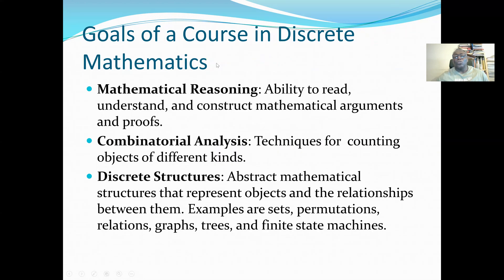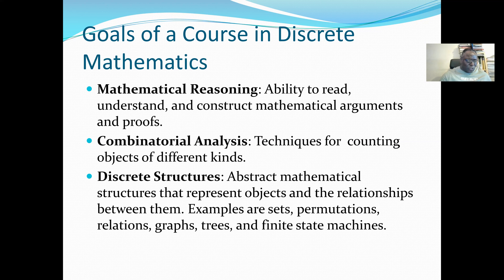The goals of a course in discrete mathematics: the first is to gain mathematical reasoning. Mathematical reasoning is the ability to read, understand, and construct mathematical arguments and proofs — this will be our Chapter 1 topic. Students must understand mathematical reasoning in order to read, comprehend, and construct mathematical arguments. This course starts with a discussion of mathematical logic in Chapter 1.